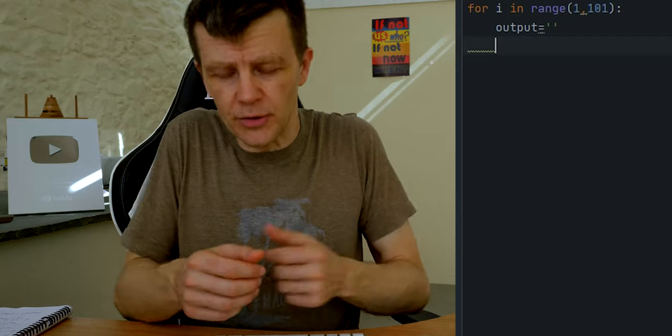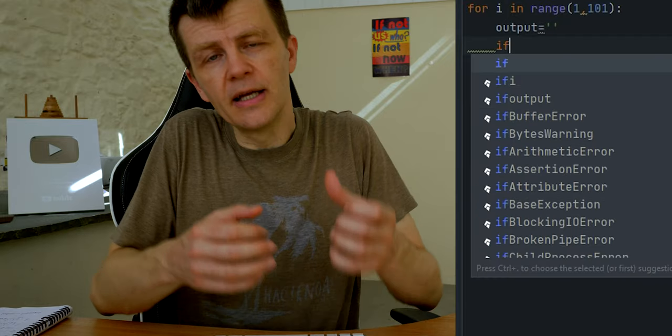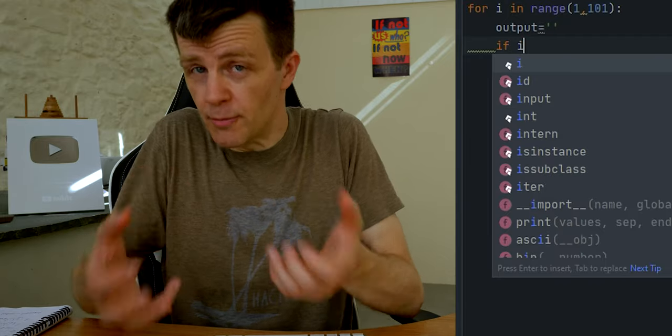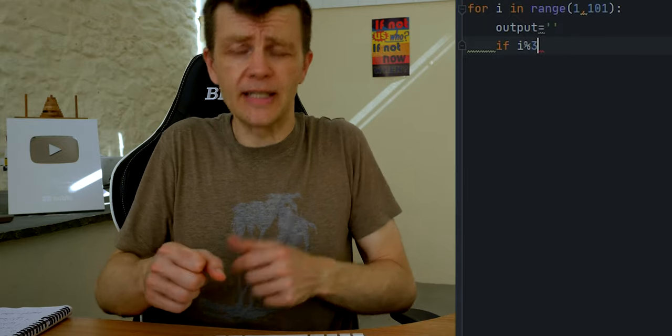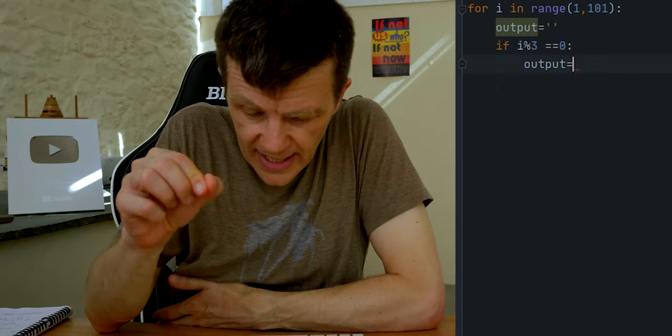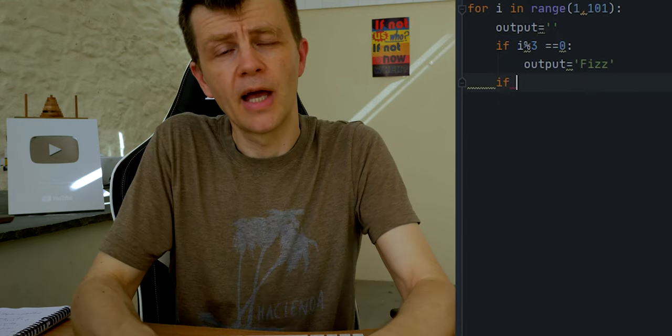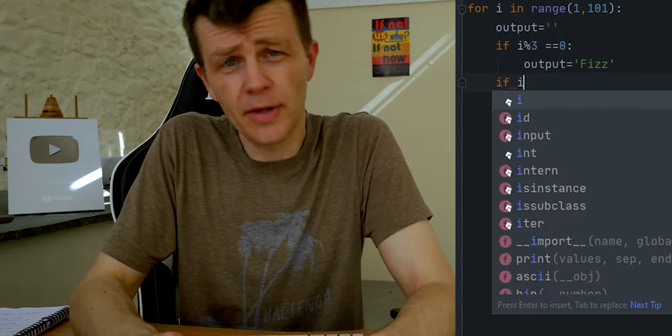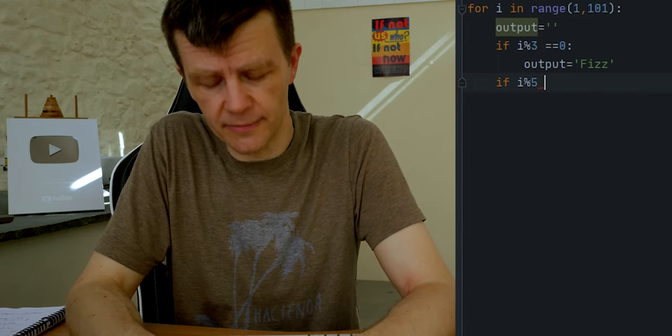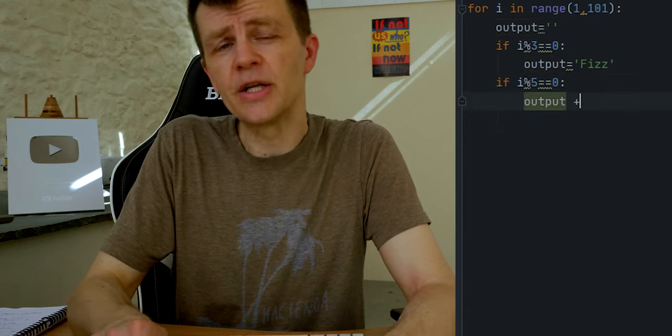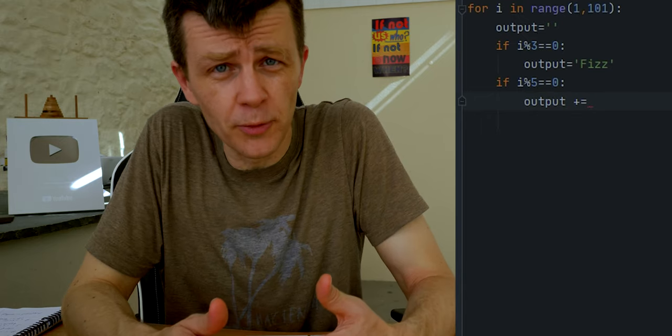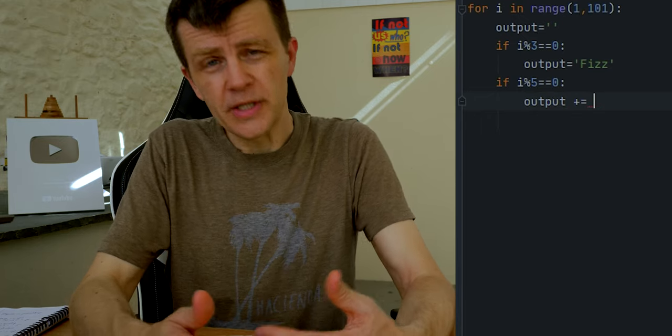And then we'll do some similar logic. So if i divided by three, if the remainder of that is zero, if i modulo three is equal to zero, then we will make output, this string output, equal to fizz. And on the second test, now we'll test to see whether it is divisible by five, whether it's a multiple of five. And if it is, then we just add buzz to the string that we've already got.